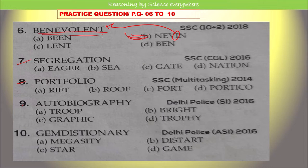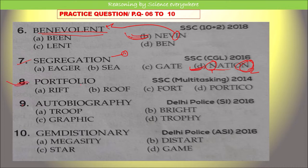In question number 7, option D is the correct answer. The word 'nation' cannot be formed because we need two N's, but the given word has only one N. For question number 8, option D again cannot be formed because the letter 'C' does not appear in the given word, so option D is the correct answer.